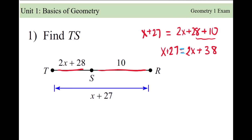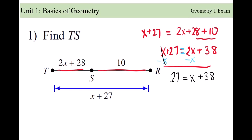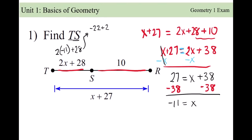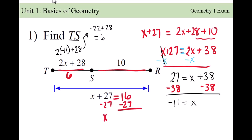That's the end of the geometry — now we're going to do some algebra. Combining like terms: x plus 27 equals 2x plus 38. Subtract x from both sides — that cancels — so we're left with 27 equals x plus 38. Subtract 38 from both sides: 27 minus 38 is negative 11, so x equals negative 11. But they asked us to find the length of segment TS, so we substitute back in: 2 times negative 11 plus 28 gives negative 22 plus 28, which is 6. So that chunk is 6 units long.